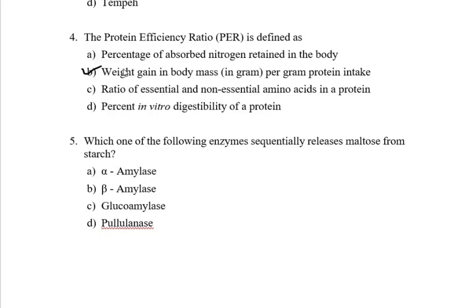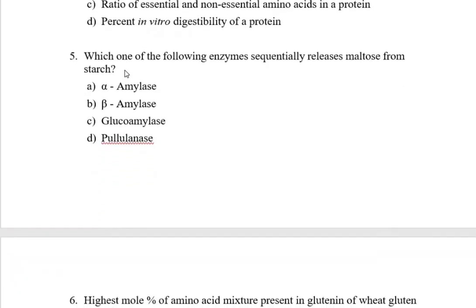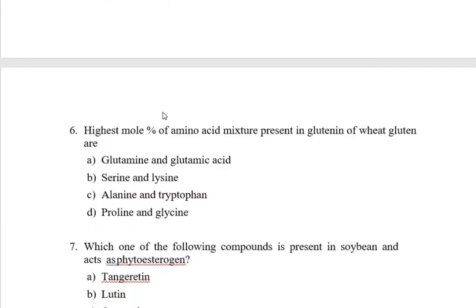Next question: which one of the following enzymes sequentially releases maltose from starch? The correct answer is option B: beta-amylase. Next question: highest mole percent of amino acid mixture present in gliadin of wheat gluten are option A: glutamine and glutamic acid.